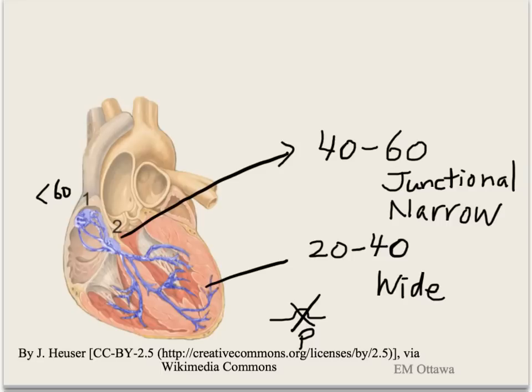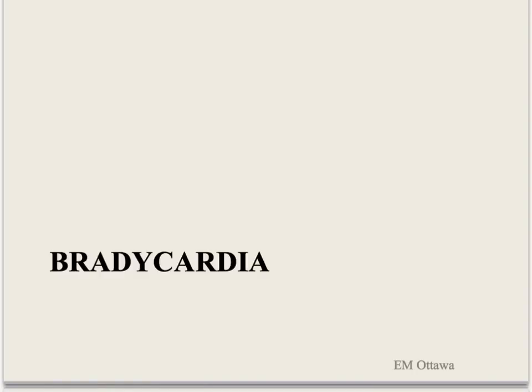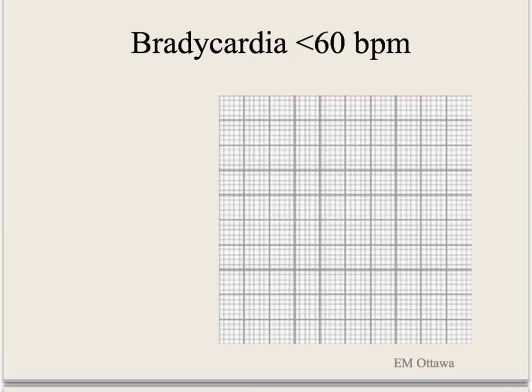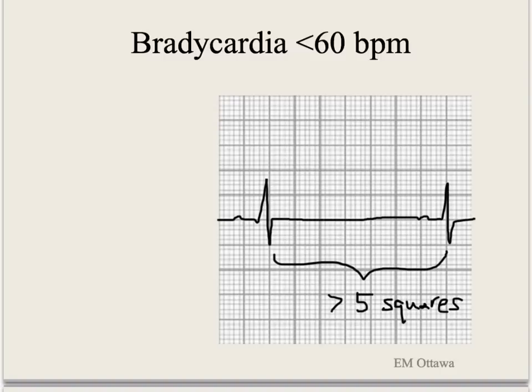These are important concepts when we try to tackle what kind of bradycardia rhythms they are. Bradycardia is defined as a ventricular rate of less than 60 per minute. On a standard speed ECG rhythm strip, there will be more than 5 squares between the QRS complexes. Five squares on a standard rhythm strip also equals 1 second.